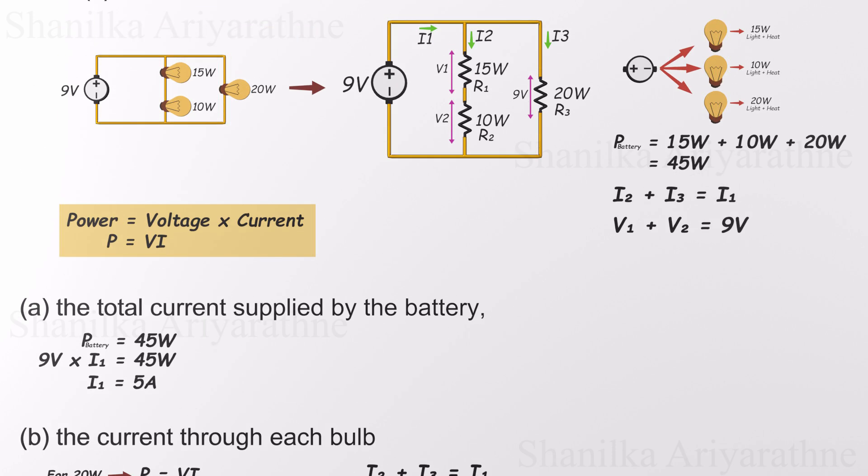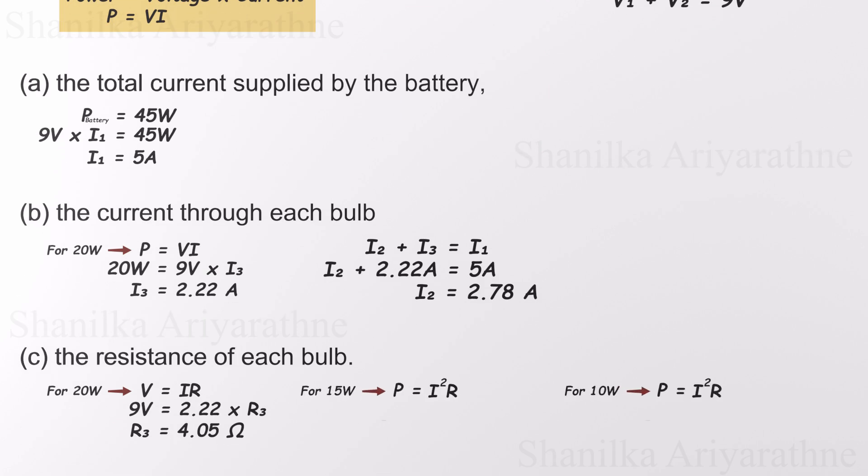Now the other two bulbs, the 15-watt and 10-watt ones, are a bit more challenging since they're in series and we don't know the individual voltage drop across each. But we do know that both bulbs share the same current, 2.78 amps, and we're given their power consumption. So instead of juggling voltage, we use a more efficient combined formula. P equals I squared times R. This is a combined formula that comes from merging the power equation with Ohm's law. Plugging in the numbers for each bulb gives us their individual resistances directly. No need to worry about voltage splits. And just like that, we've calculated the resistance for all three bulbs, wrapping up the analysis and proving once again that with the right tools, even a tangled-looking circuit becomes a straightforward problem to solve.